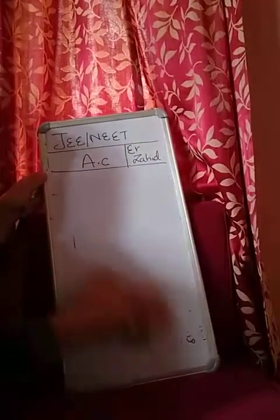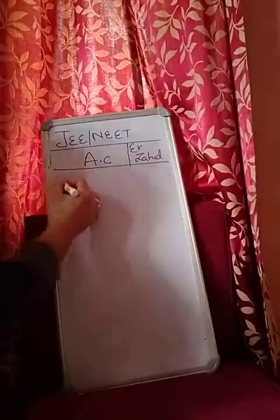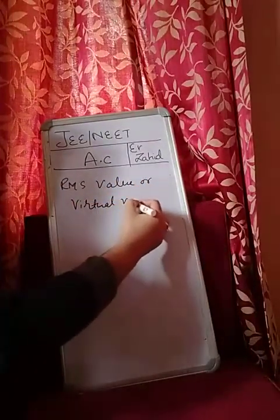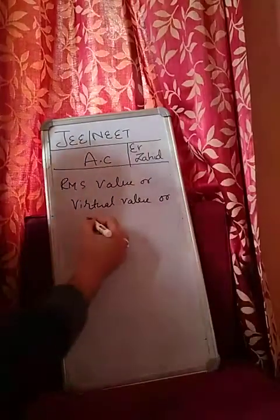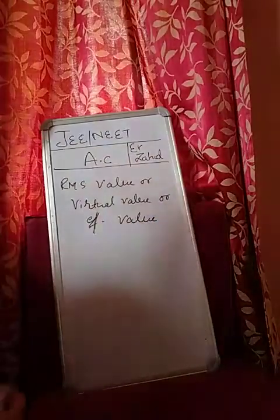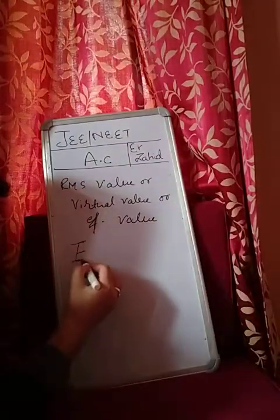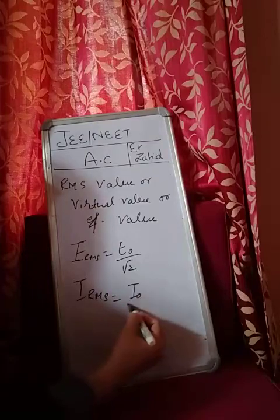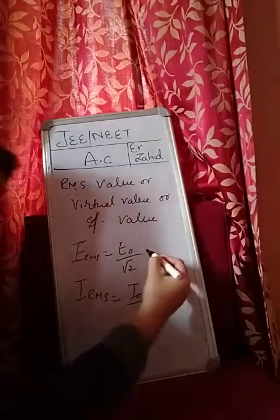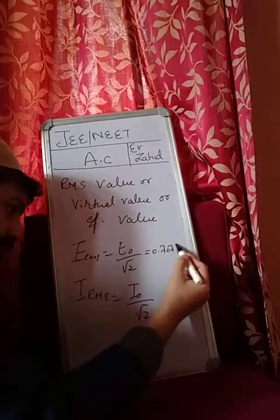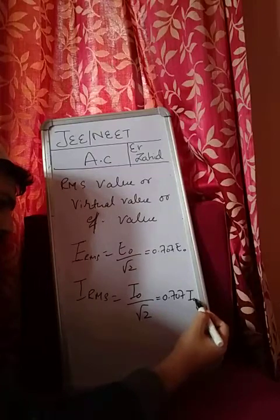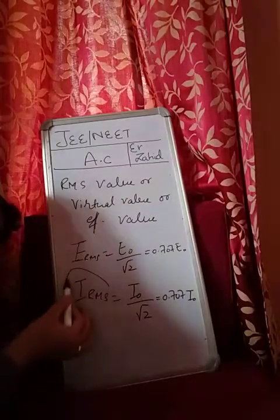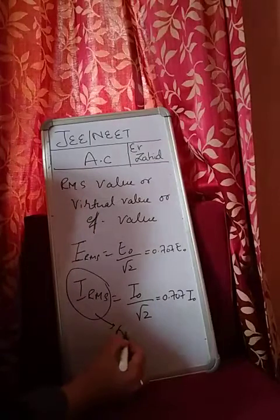Now the third one is RMS value. This can also be called virtual value, this can also be called effective value. RMS value of current or EMF is: E RMS is E naught by root 2, I RMS is I naught by root 2. And when you look at numericals, you should remember this: 0.707. So this is called the RMS value of current. It is this value which we can measure with the hot wire instruments.